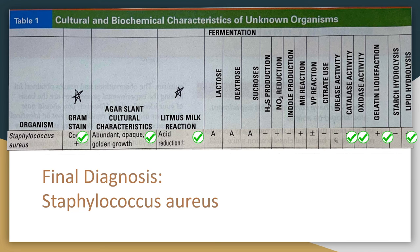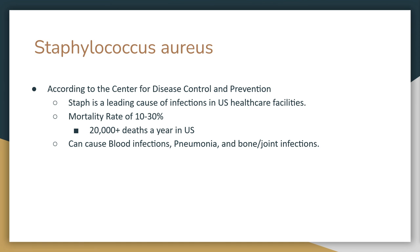So, is Staphylococcus aureus relevant? Does it affect us in any way, shape, or form? Well, the answer is absolutely yes — to an alarming degree, in fact. Of the estimated 3 million cases in the U.S. every year, more than 20,000 die. According to the CDC, Staph is the leading cause of infections in U.S. healthcare facilities.